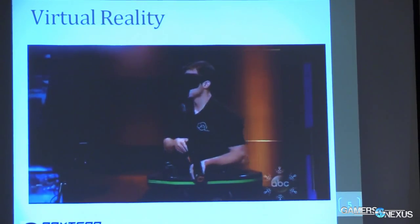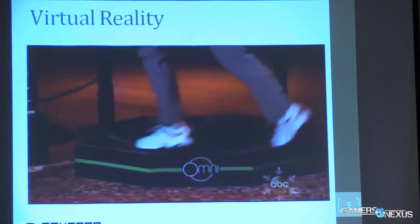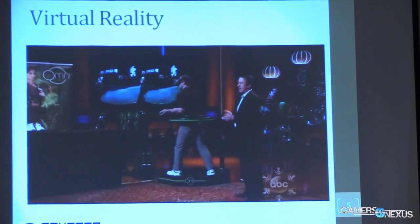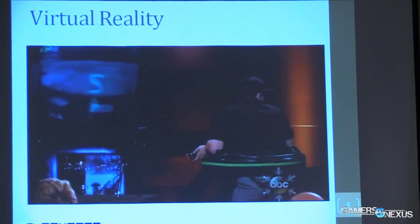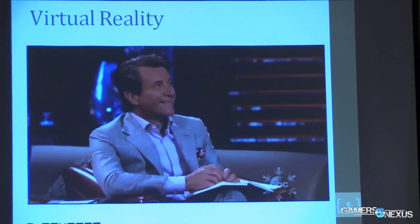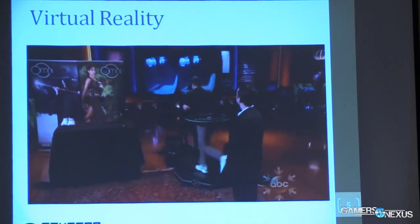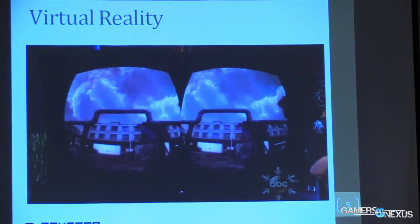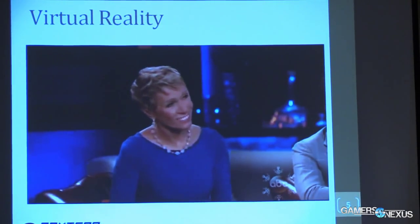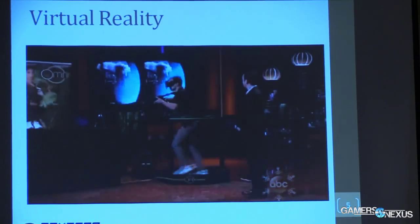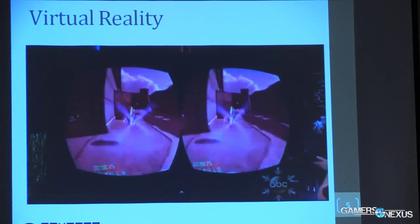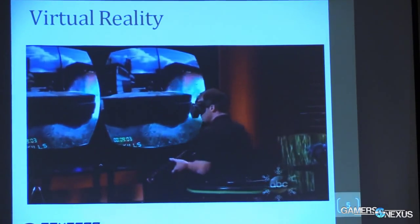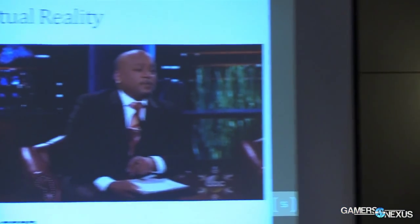The Omni enables you to walk, run, jump, and crouch in 360 degrees, fully reminding your body of the motion — although you obviously need to try it yourself to get the full experience.